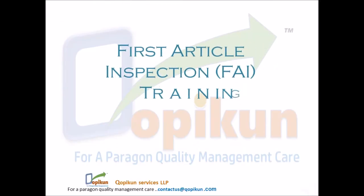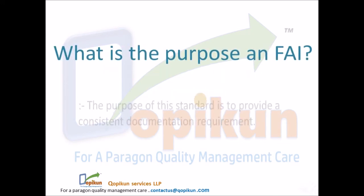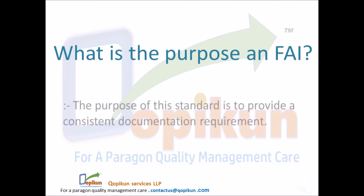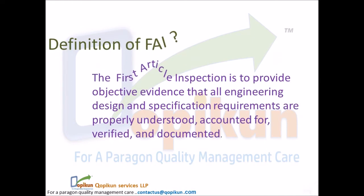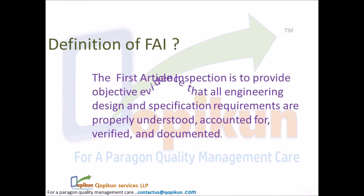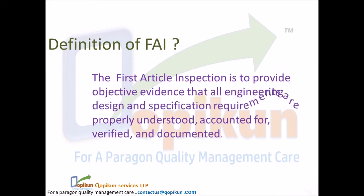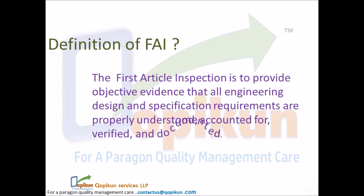First Article Inspection, FAI Training. What is the purpose of an FAI? The purpose of this standard is to provide a consistent documentation requirement. The first article inspection is to provide objective evidence that all engineering design and specification requirements are properly understood, accounted for, verified, and documented.